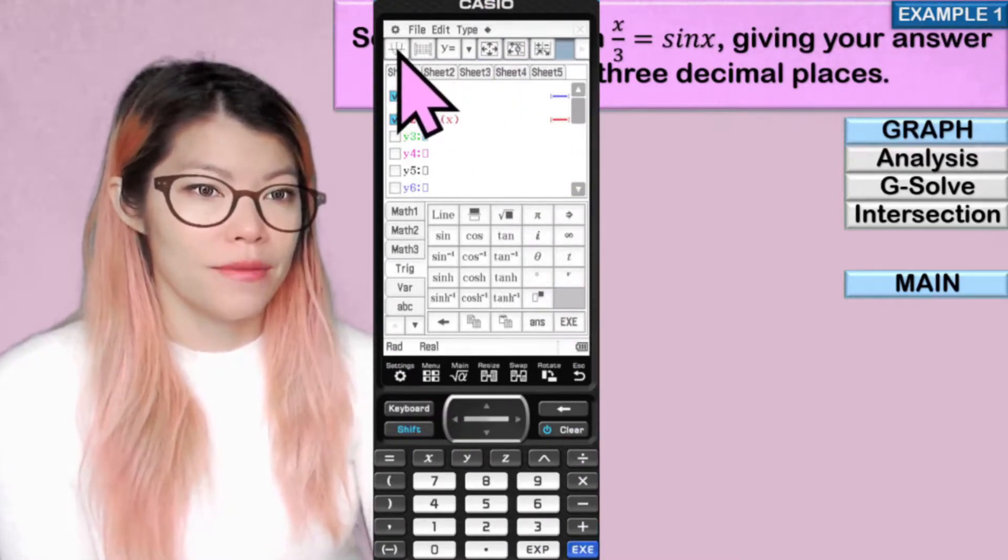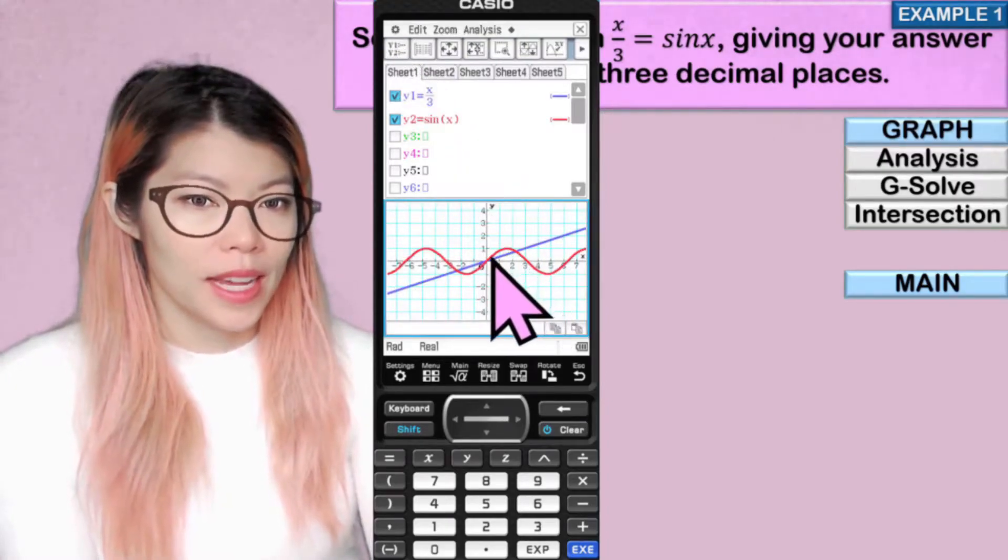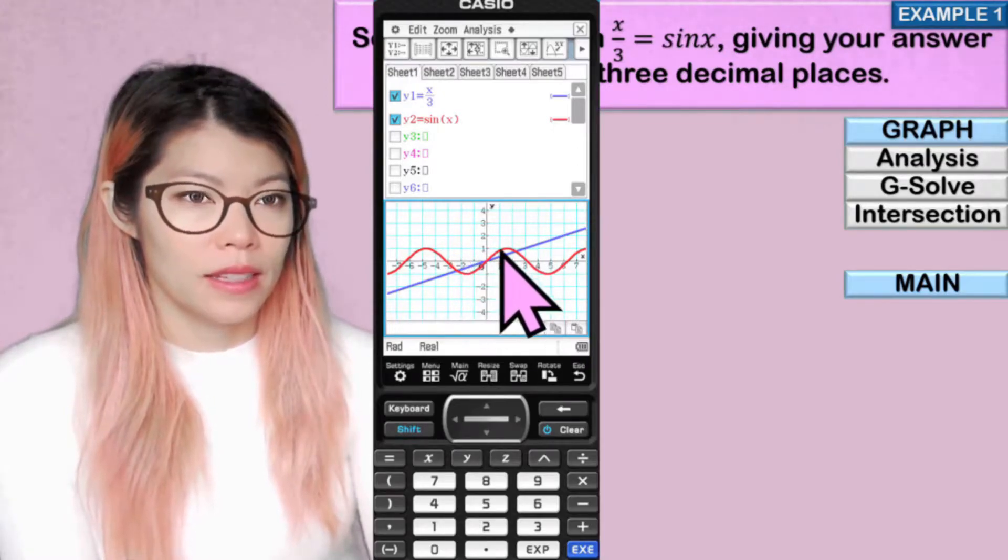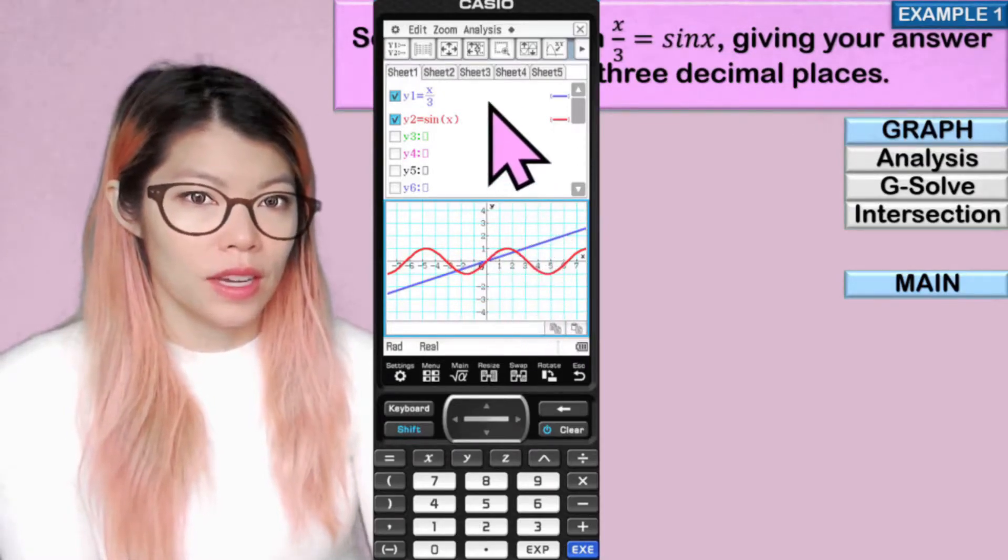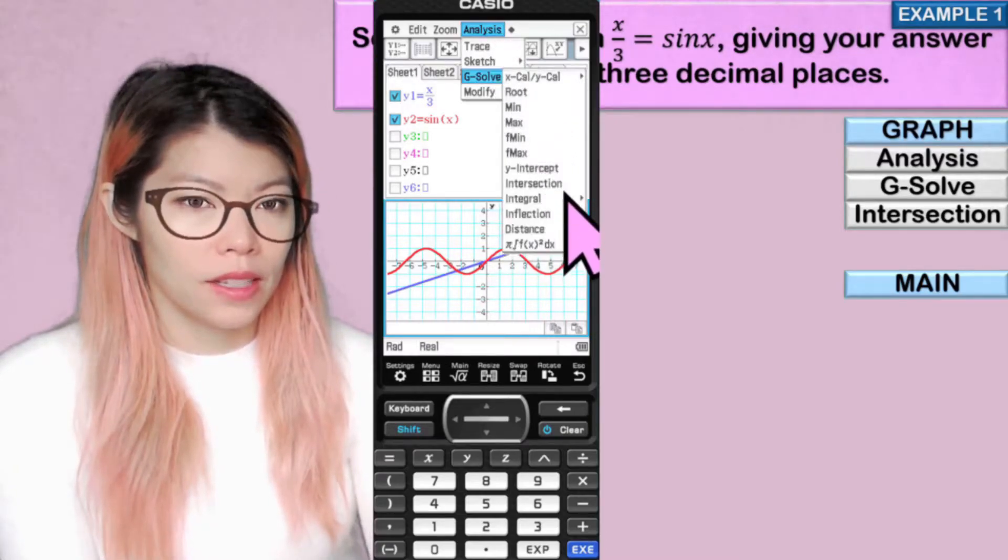And now we go to graph by pressing that button. We can see that the intercepts happen there. So we need to find the intersections. So we go to analysis, g-solve, and intersection.